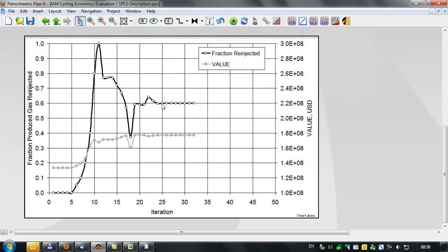We're getting a fraction being re-injected of sixty percent with a maximum net present value of about one point one eight zero million dollars for this two-well pair.